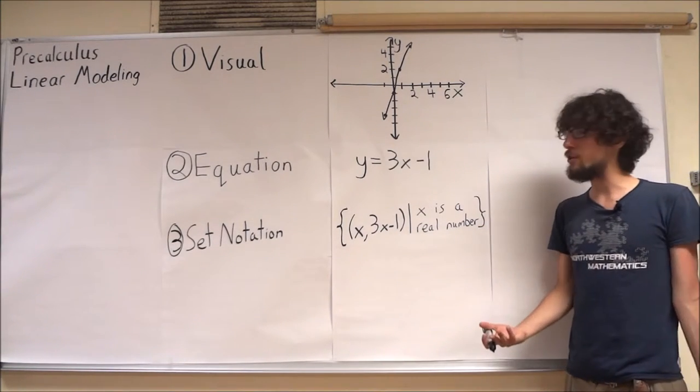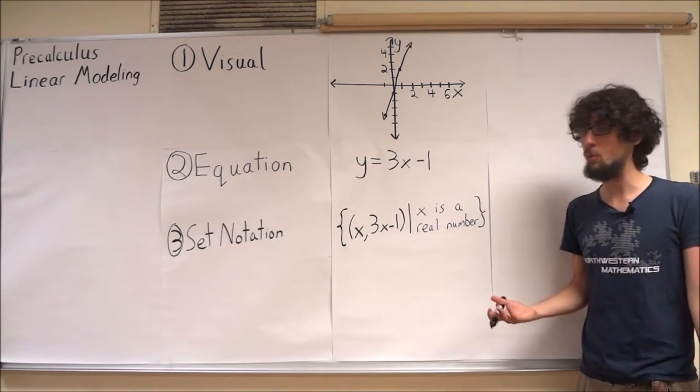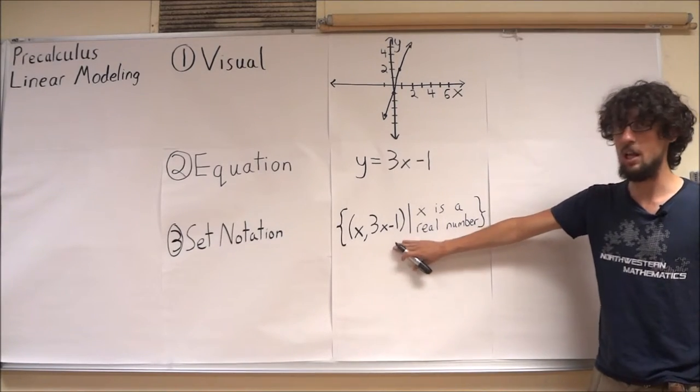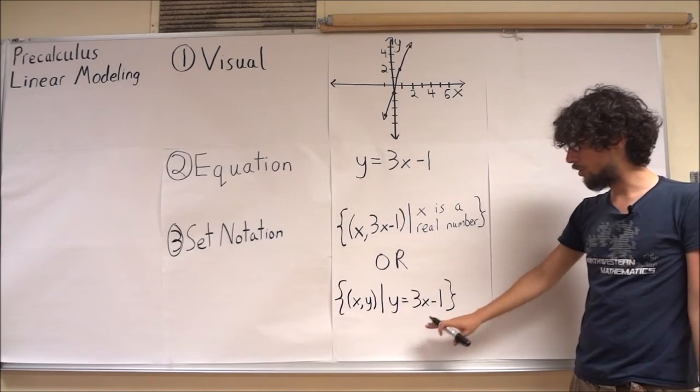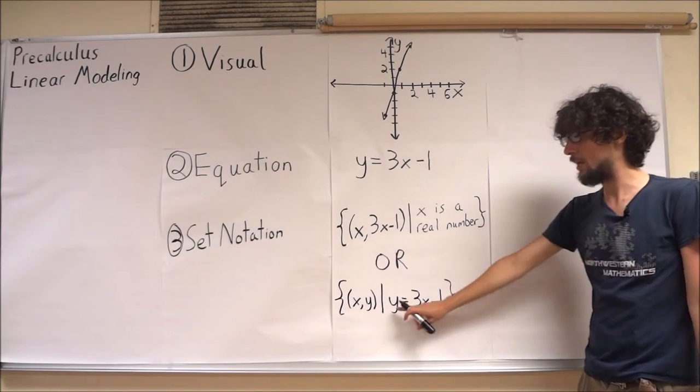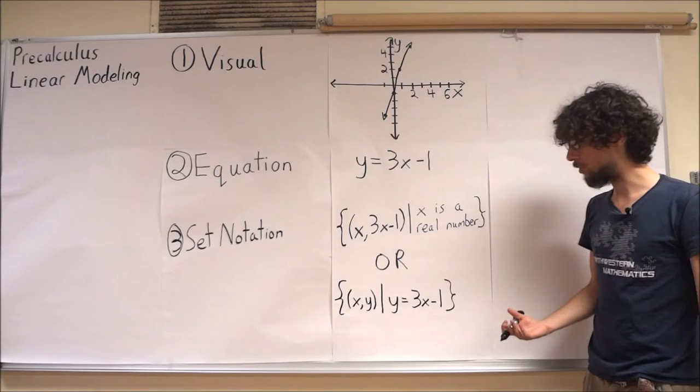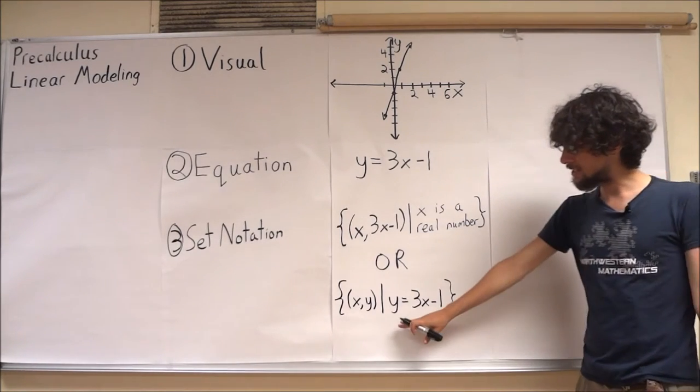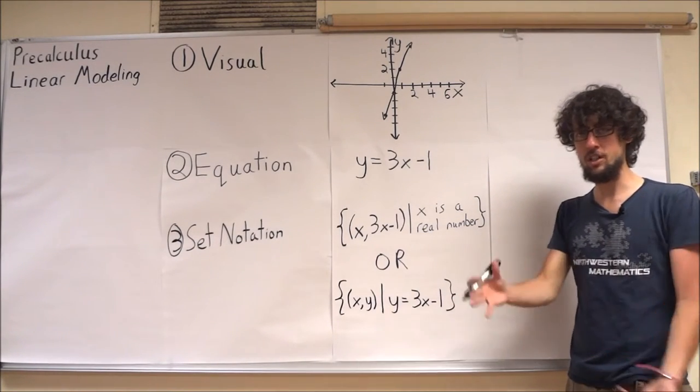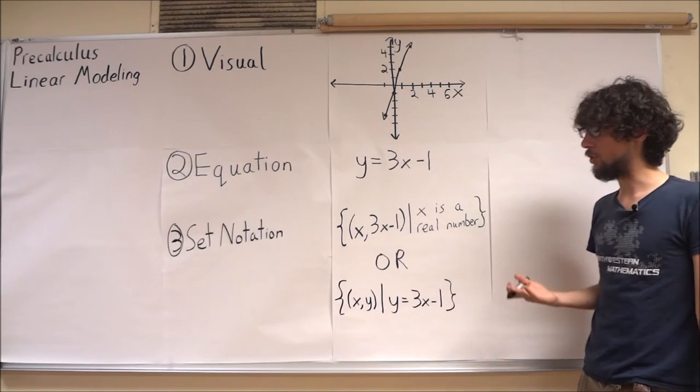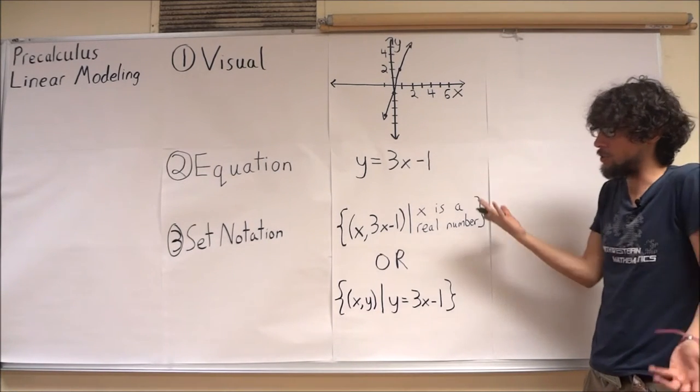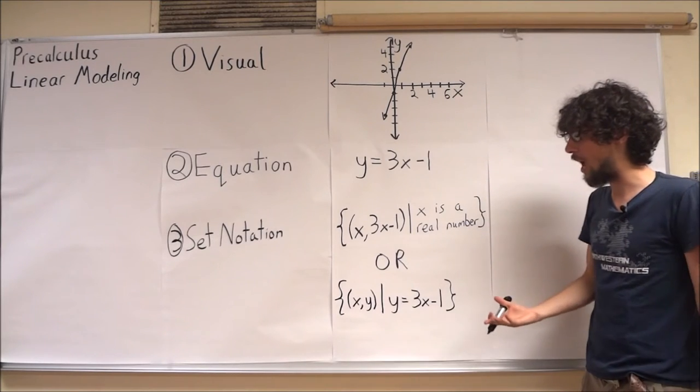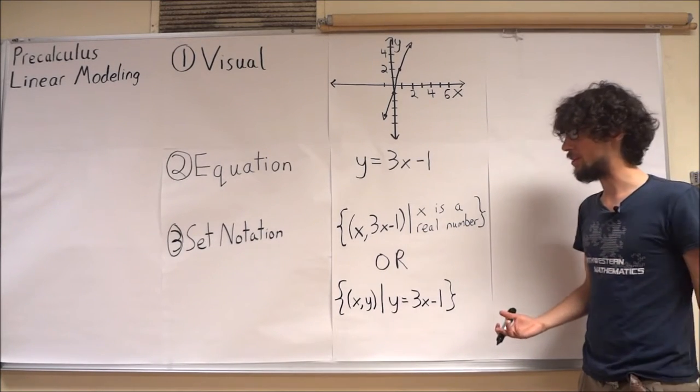But there's another form that also works perfectly well to write this using set notation. In this form, to be a bit more formal, I should really also include that x and y are both real numbers here. This is an interesting kind of combination of our set notation and our original equation. We're really specifying, when we write this equation, that we're saying any point on the line, x, y, will satisfy this equation. And that really is exactly what we're saying down here as well.